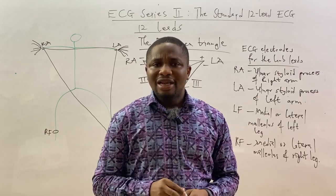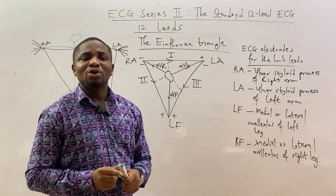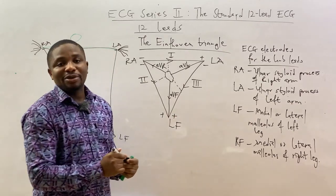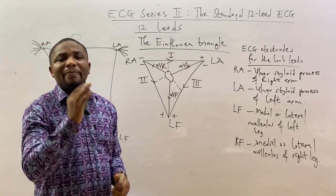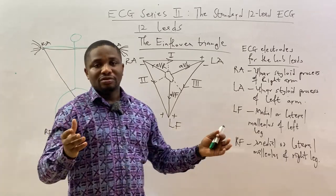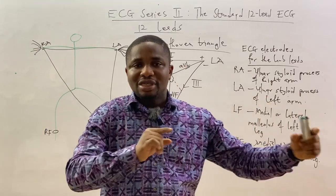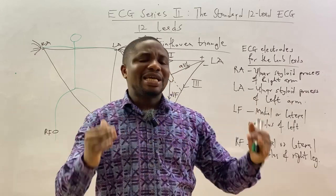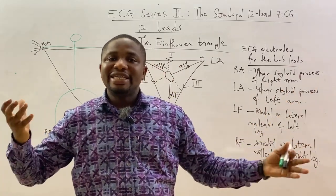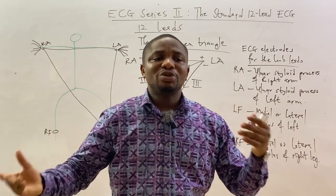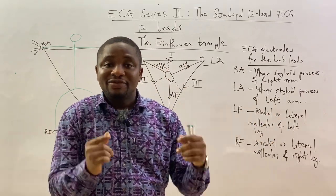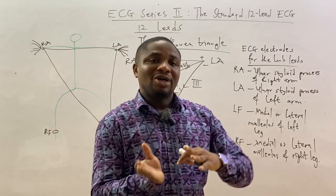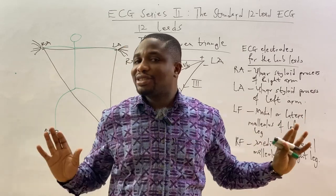At all times, in whichever direction, the left foot will be positive. At the ends of a lead, the electrodes must be oppositely charged — if one side is negative, the other must be positive — or they have a single charge. This determines the polarity arrangement of all the limb leads.